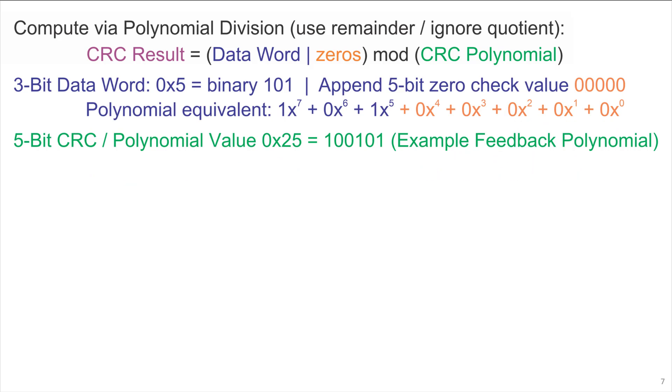We'll use a 5-bit CRC with polynomial value hexadecimal 25, binary 100101. Other polynomials could be used, but that's the one we'll use for the example. Those binary digits correspond to the coefficients of a polynomial 1x^5 + 0x^4 + 0x^3 + 1x^2 + 0x^1 + 1x^0 with the other terms being 0.